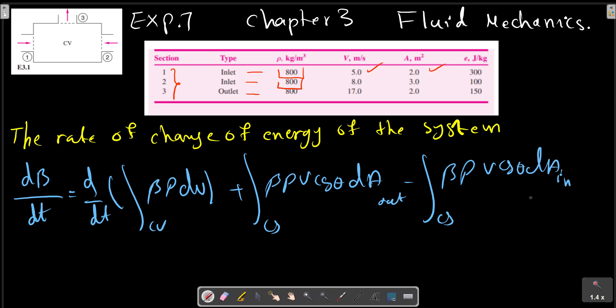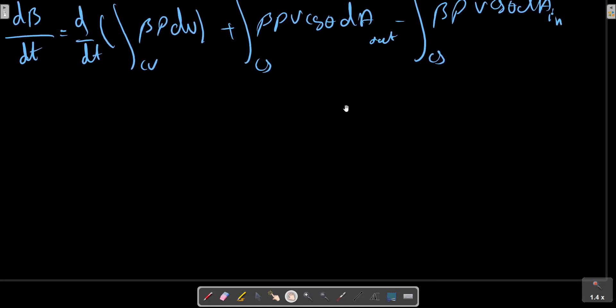We will just define the property here. In this case, the property is B and beta is E. So dE/dt equals to...